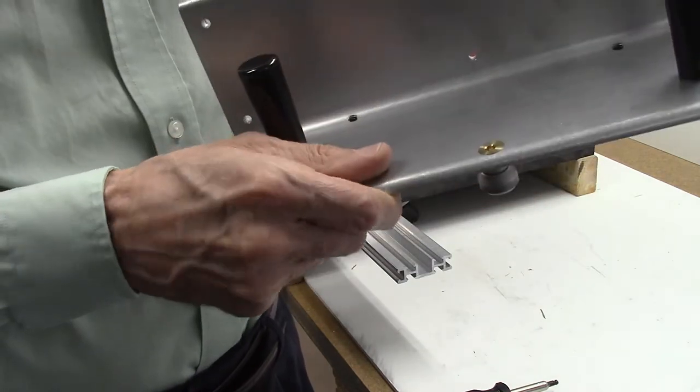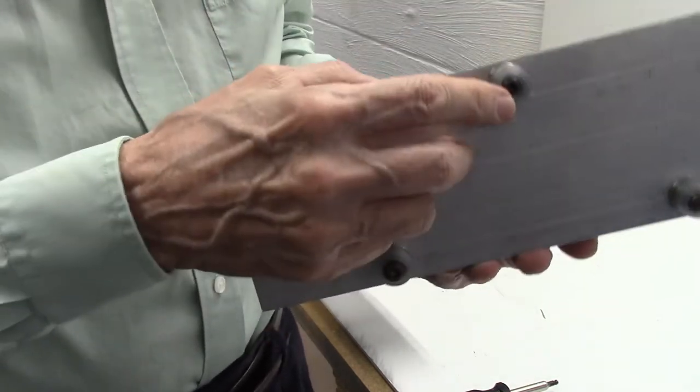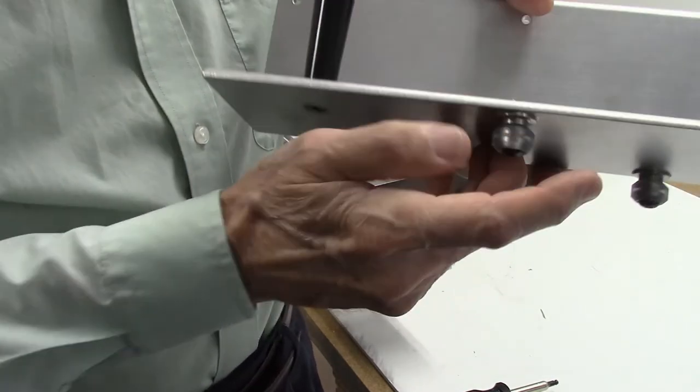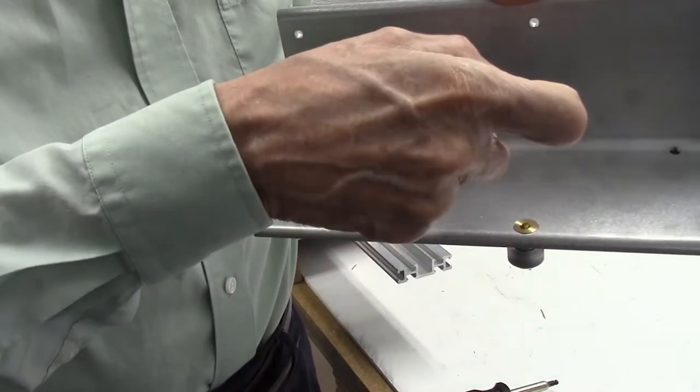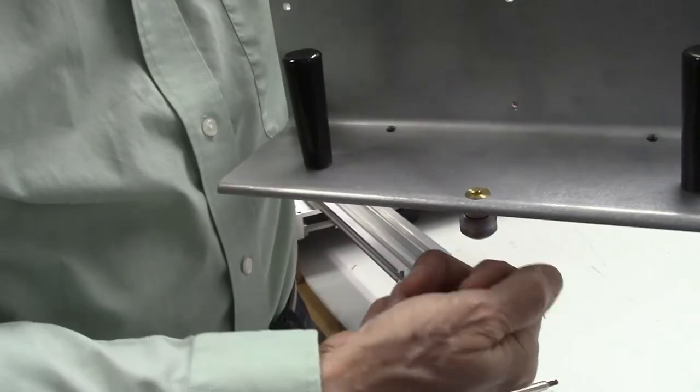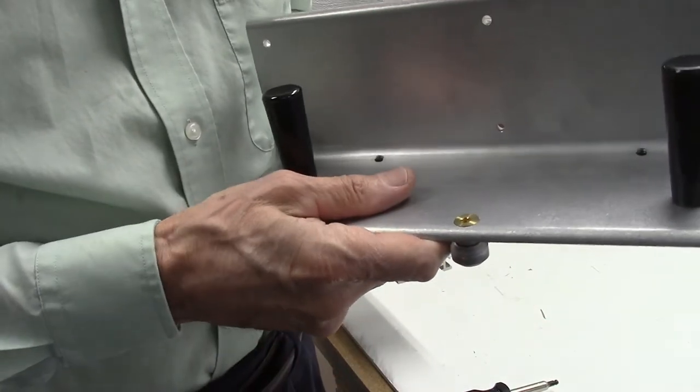It's adjusted by putting an Allen wrench in the top, another one in the bottom, loosening the bottom one, rotating the top one until you get the right tension, and then tightening the bottom Allen wrench. That's all there is to adjust it.